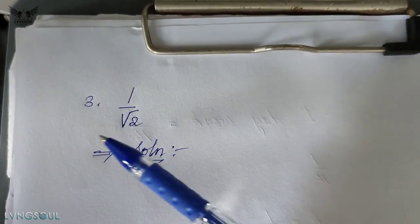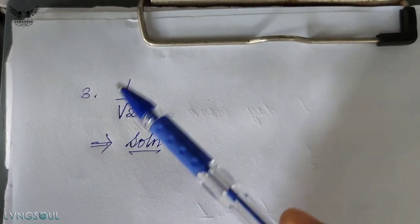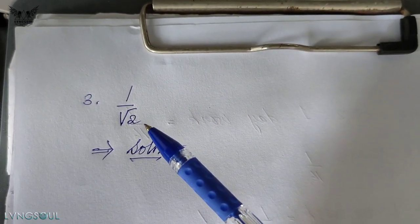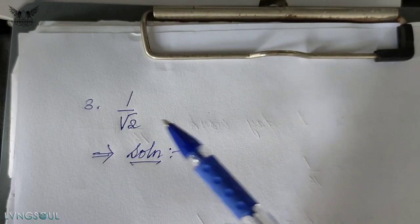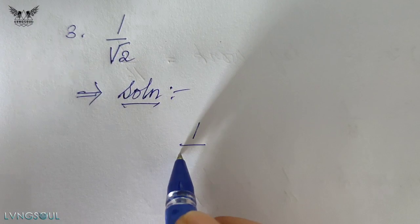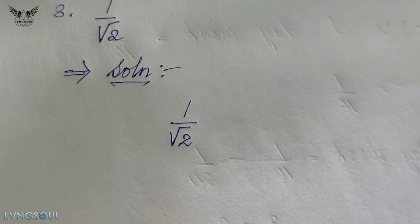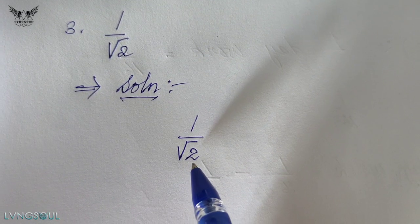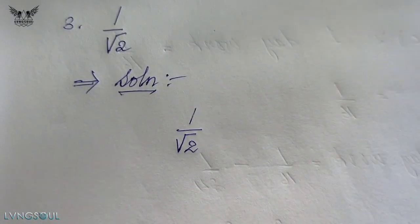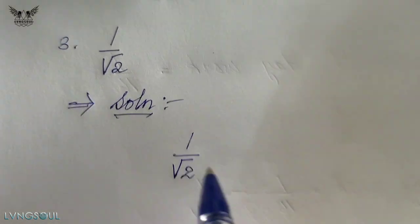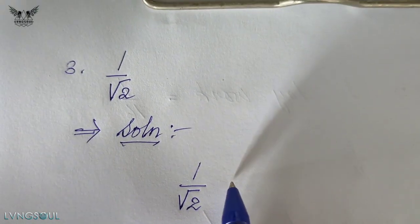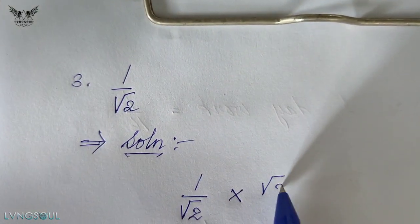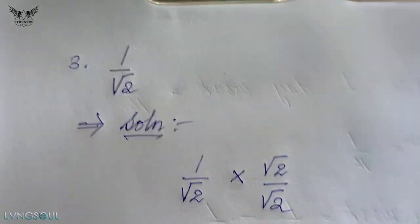We need to rationalize the irrational number. Let's take a look at root 2. We rationalize the denominator. The denominator is root 2. Root 2 is nonterminating, meaning it is irrational. The denominator is root 2, and we want to express this as a rational number — that means the sum gives us 2 by 2.